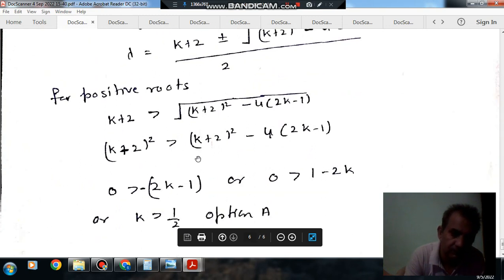Squaring both sides, (K + 2)^2 > (K + 2)^2 - 4(2K - 1). We cancel out (K + 2)^2, so 0 > -4(2K - 1), or 0 > -2(2K - 1).